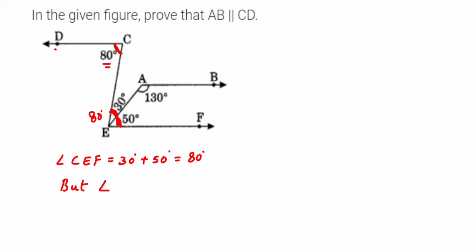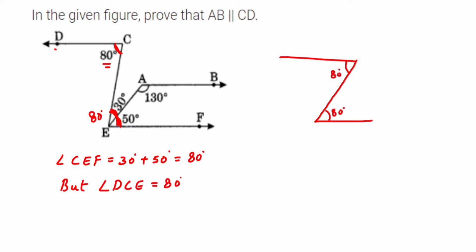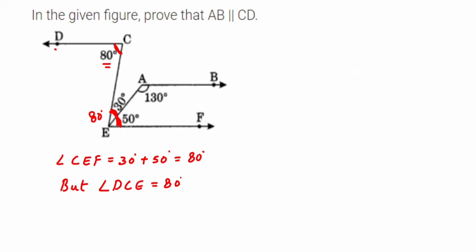Angle DCE is equal to 80 degree. It's like a zigzag — we got 80 degree on one side and 80 degree on the other. So these are alternate interior angles and they are equal. If they are equal, this means that CE will become the transversal and the lines CD and EF will be parallel. This is our conclusion: CD and EF are parallel.